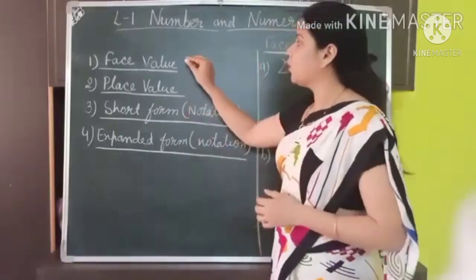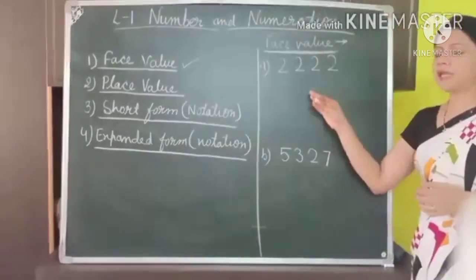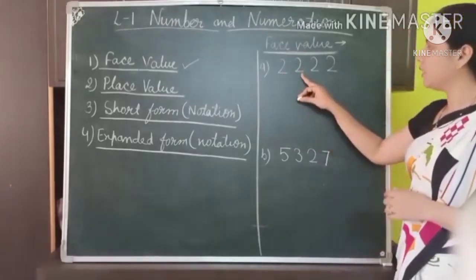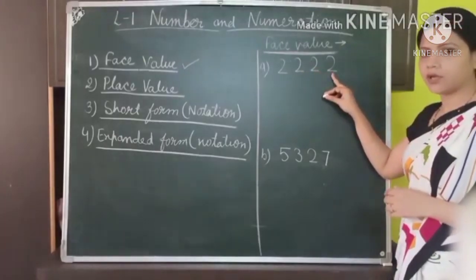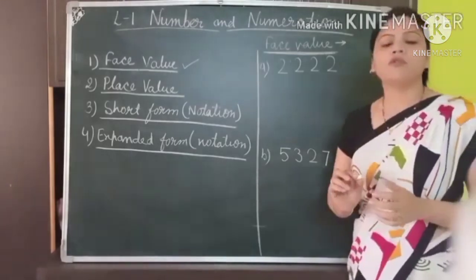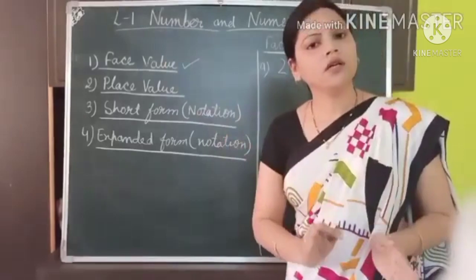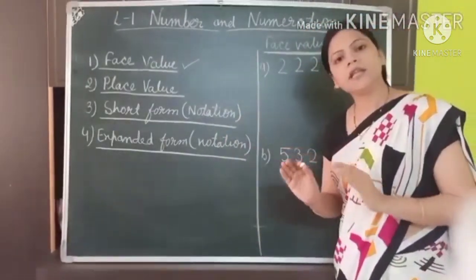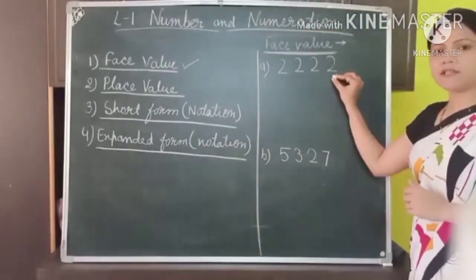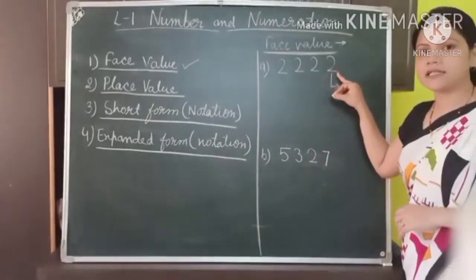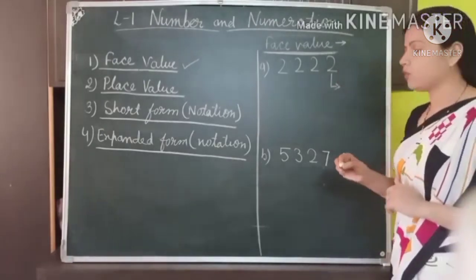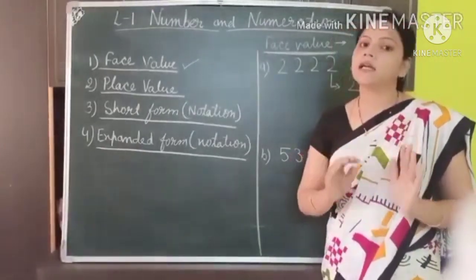So let us start with face value. As you can see, I have written here two numbers. The first one is 2,222. The second one is 5,327. To find out the face value of a certain digit, we have to just write that number itself — face value of a number is the digit itself. Like, the face value of this digit 2, placed at the 1's position, is 2 because face value means the digit itself.